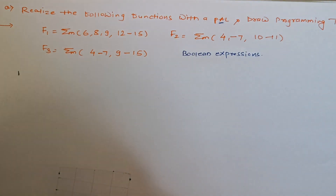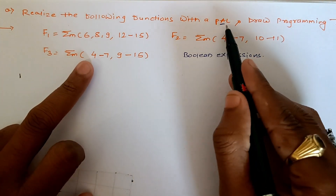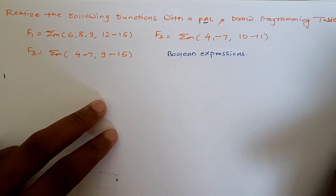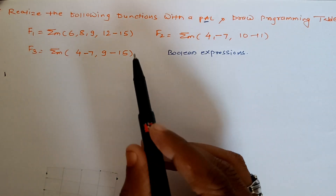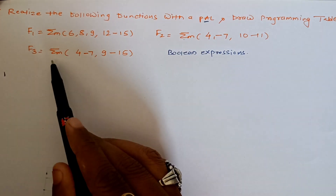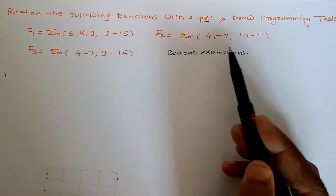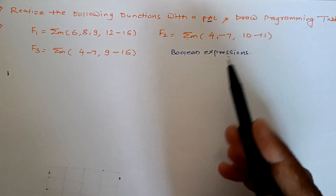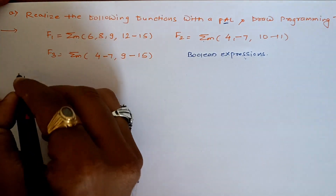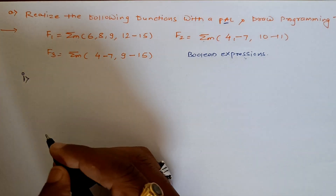Hello everyone. In this video we'll see how to realize the given functions using Programmable Array Logic and also how to draw the programming table. The question provides functions F1, F2, F3 in minterm form. First we have to simplify the Boolean expressions, and then we can realize them using PAL. So let's start with the first step, that is minimization using K-map.